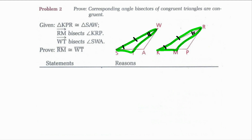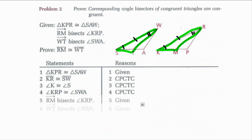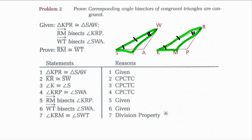Looking at this in my statements and reasons: I have my triangles congruent as a given. Based off the triangles being congruent, segment SW is congruent to segment KR, and angle K is congruent to angle S by CPCTC. Then angle KRP is congruent to angle SWA by CPCTC. Now I need my angle bisectors, which were given to me. The angle bisectors tell me to use the division property to get my smaller angles congruent, which were angle KRM and angle SWT. Now I had my small triangles congruent by angle side angle, so triangle KRM was congruent to triangle SWT. Then finally segment RM was congruent to segment WT by CPCTC.